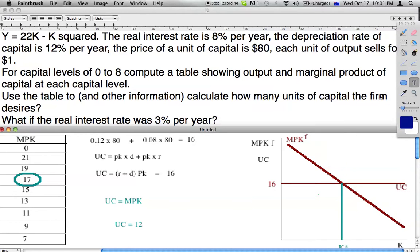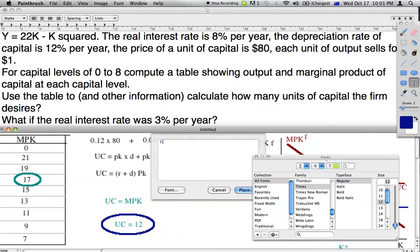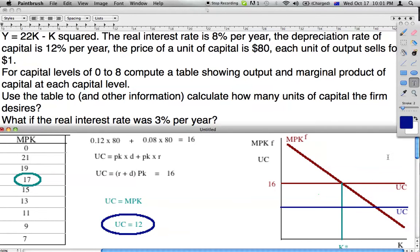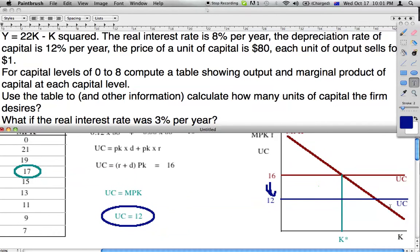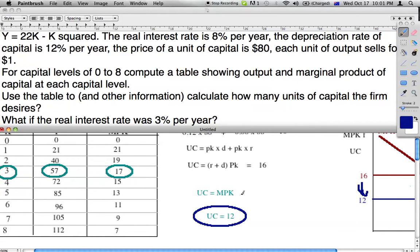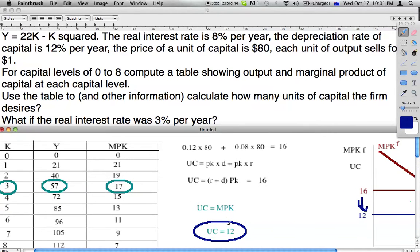To show what's happening on the graph, this here is decreasing down to 12. What is the result? The new K star equilibrium has increased, so we know now that our answer will be an increase in capital to the new K star up here.